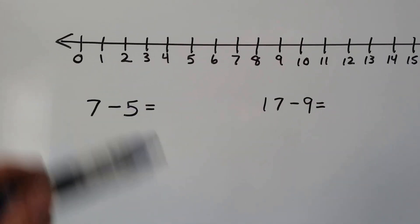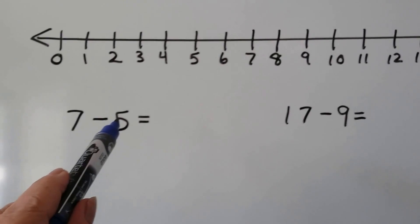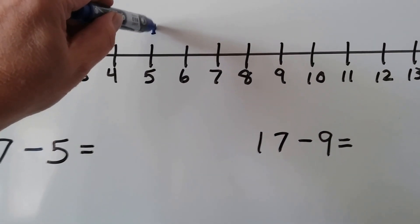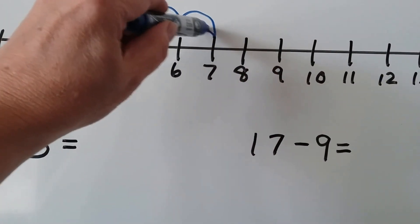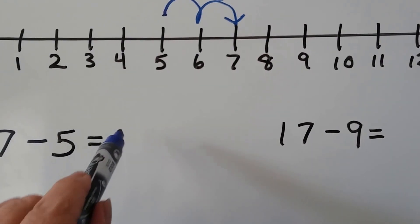If we have 7 minus 5, we start at 5 and count up to 7 to find the difference. 5, 6, 7. That was 2 hops, so 7 minus 5 is 2.